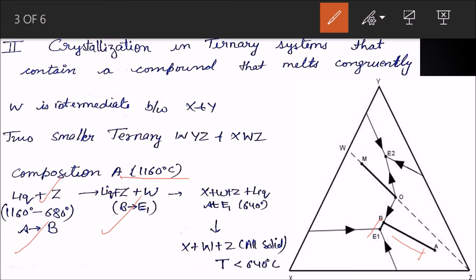When it reaches E1, X plus W plus Z will be all solid. So this will follow just the same principle as the previous binary eutectic triangular diagrams.